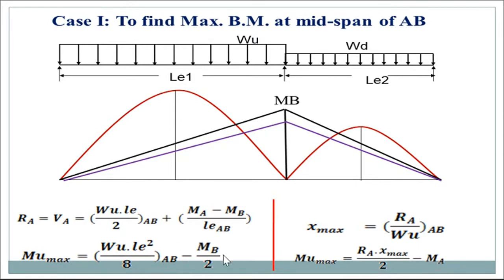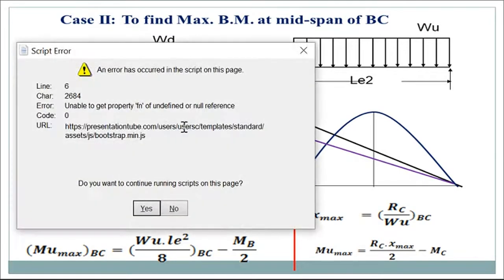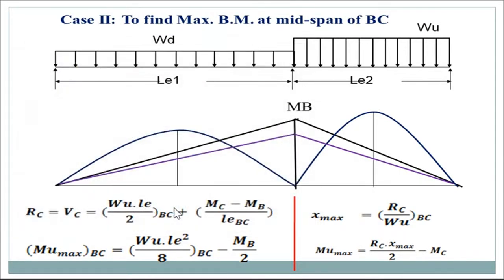There is no large variation — hardly 3 to 5% — so either using Xmax and MUmax, or we can find the maximum bending moment at the center. In Case 2, we find the maximum mid-span moment in the second span BC. The minimum load WD is applied on AB and maximum load 1.5WD plus WL on the second span. Using this combination, we again get the bending moment diagram with WL²/8 for AB and WL²/8 for BC.